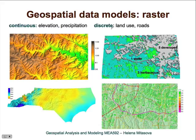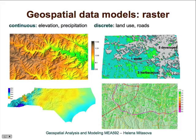Here is discrete phenomena represented as rasters. The first map is land use. The second map is roads with speed limits assigned as a raster value. For the land use map, many points have the same values, and then they sharply change to a different value as the type of land use changes. That's the main difference.